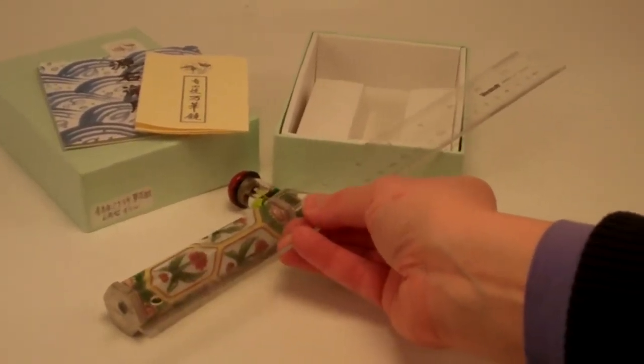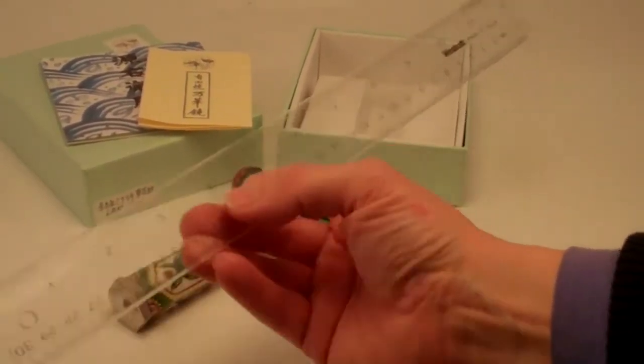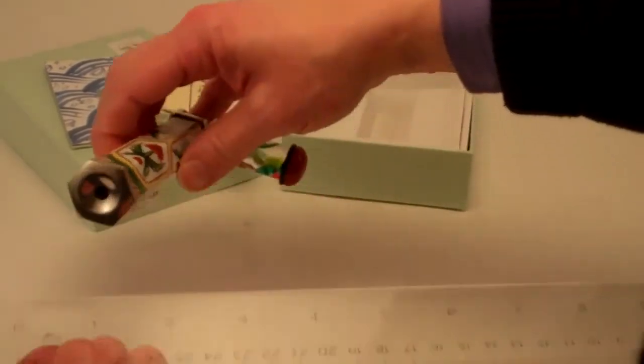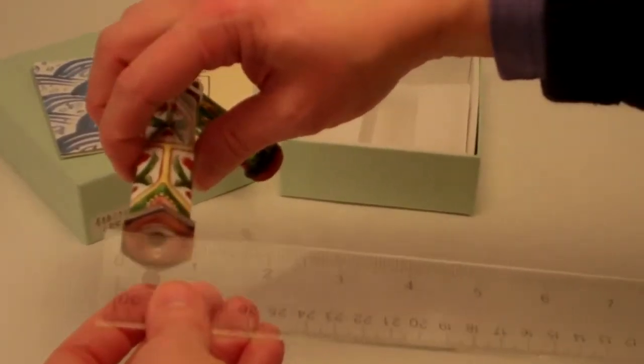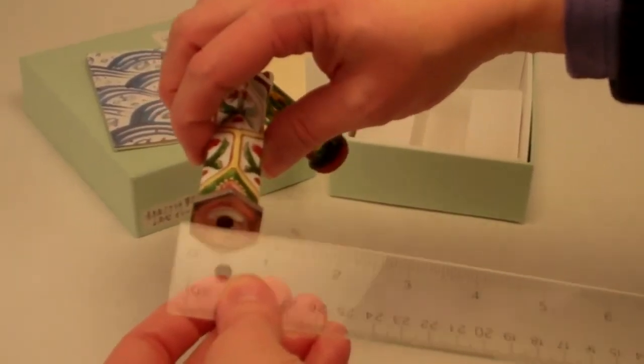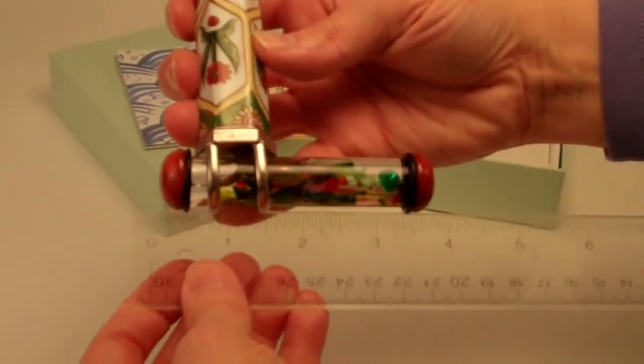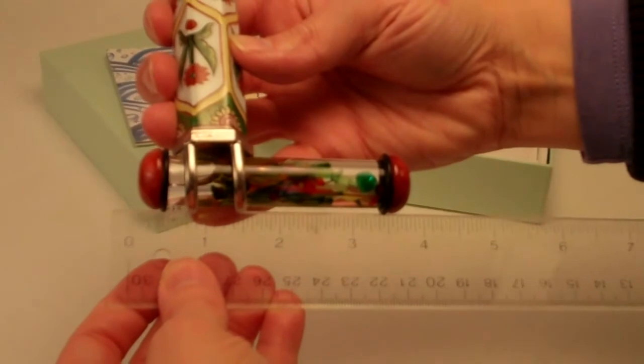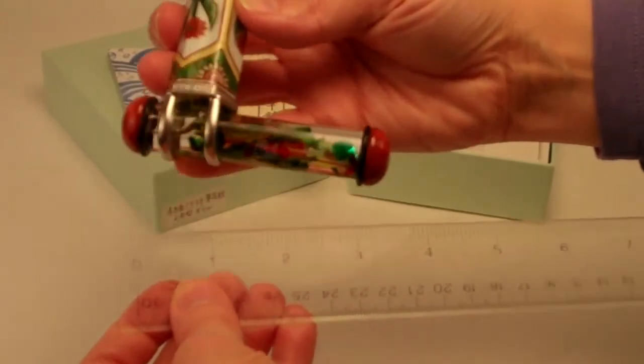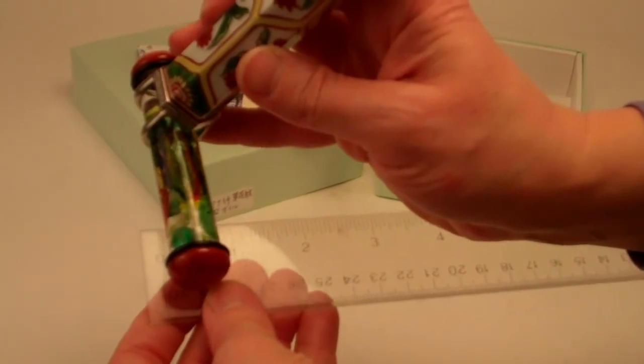This kaleidoscope measures overall length approximately 5 inches. Diameter across the eyepiece is right at 1 inch and the object chamber from end cap to end cap is 3 1/4 inches approximately with a diameter of approximately 3/4 of an inch.